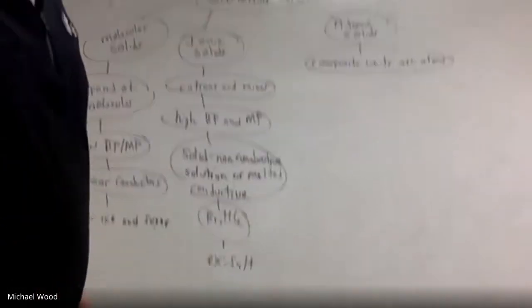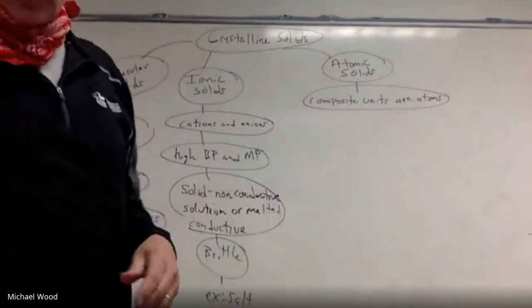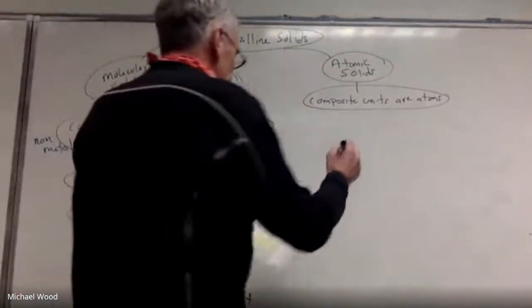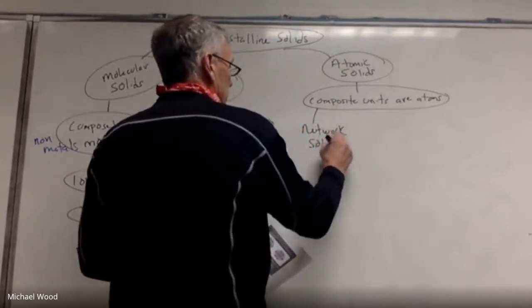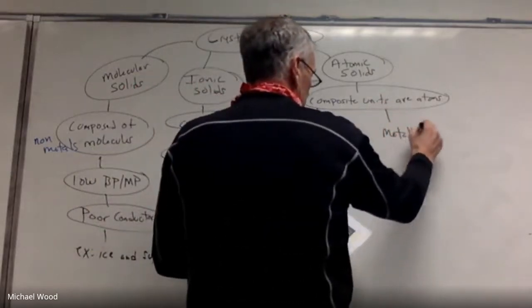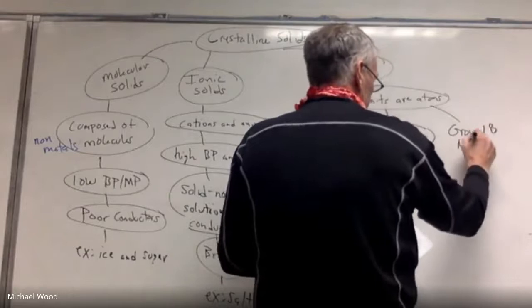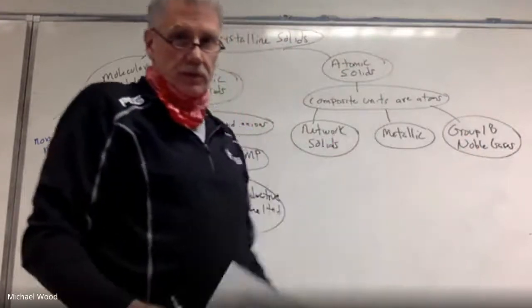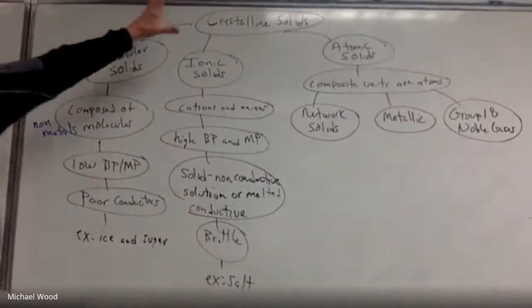Okay, so that's where we left off. So now, under crystalline solids, there's a whole category which is called atomic solids. These are composed of just atoms. So we have network solids, we have metallic metals, and then we have group 18, which are noble gases.